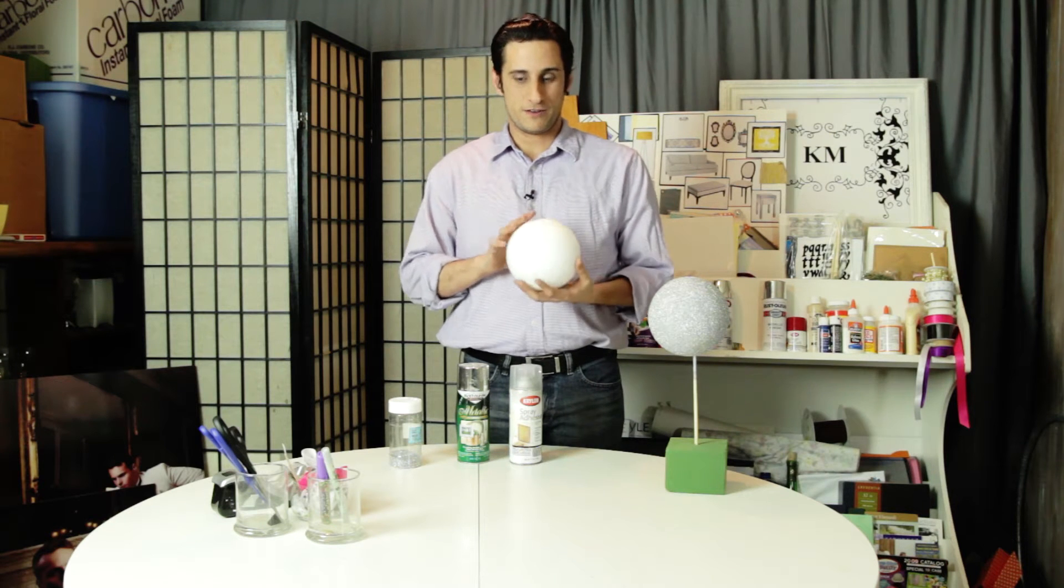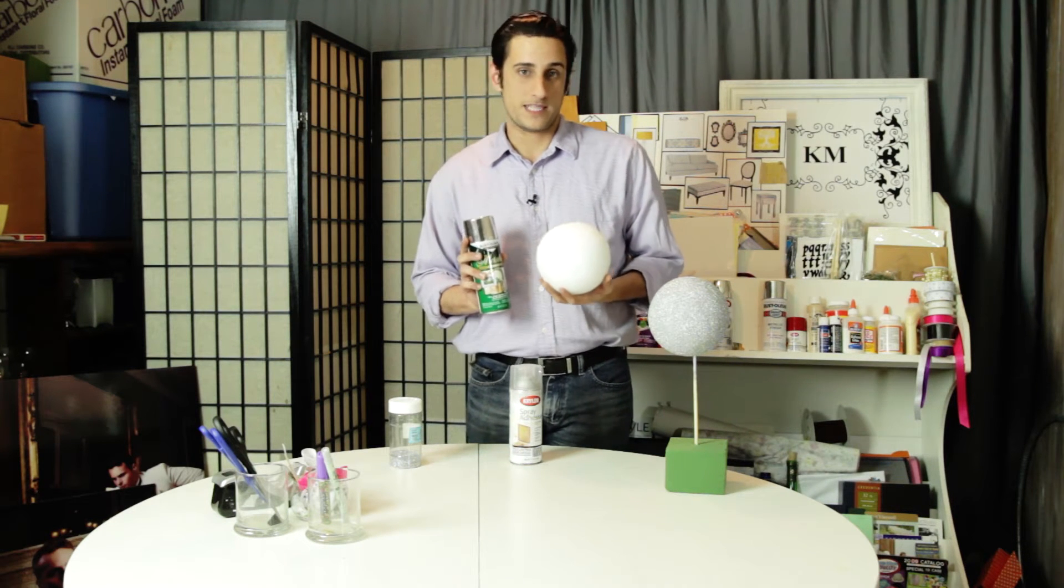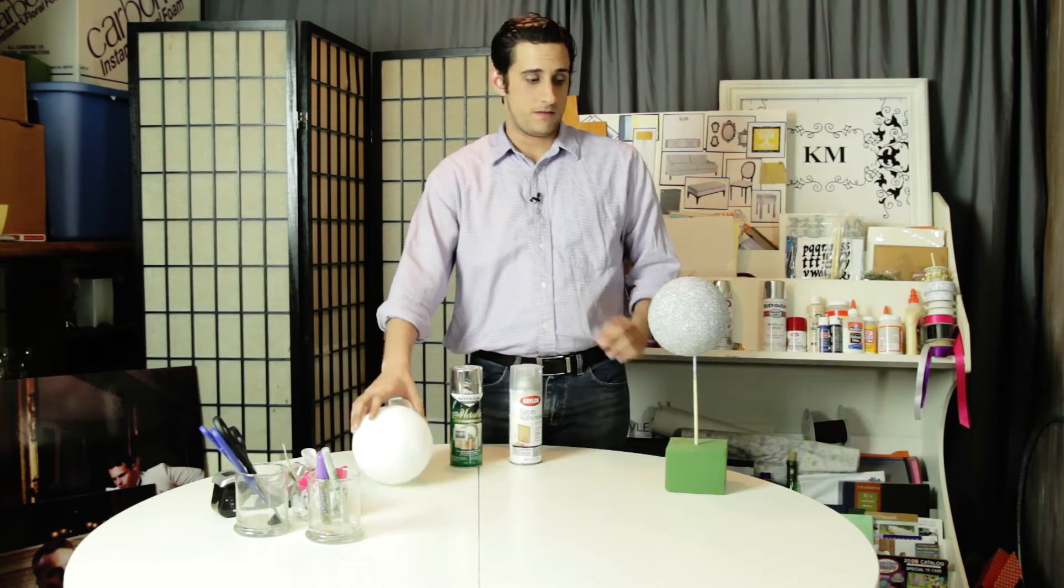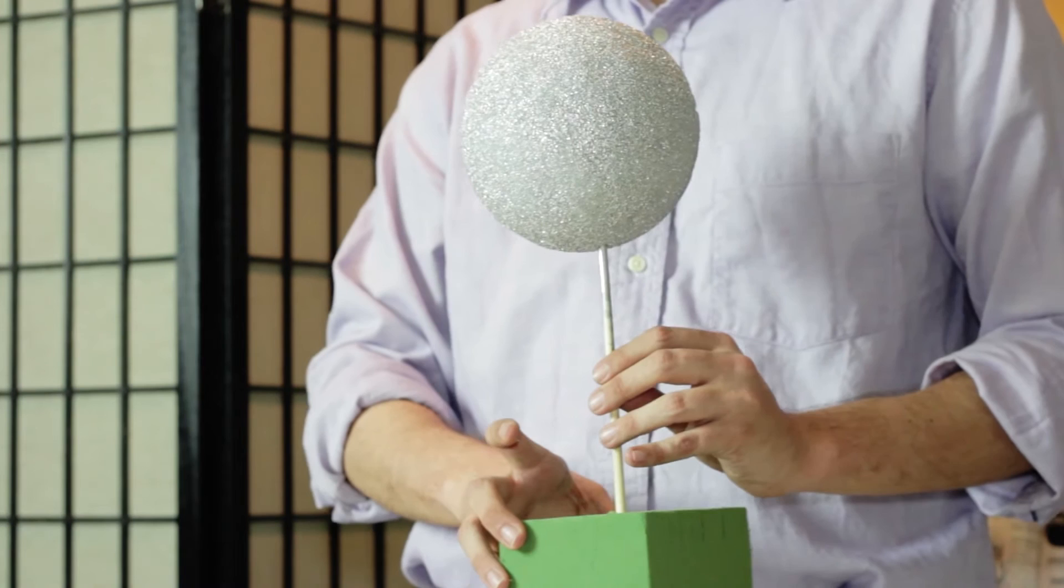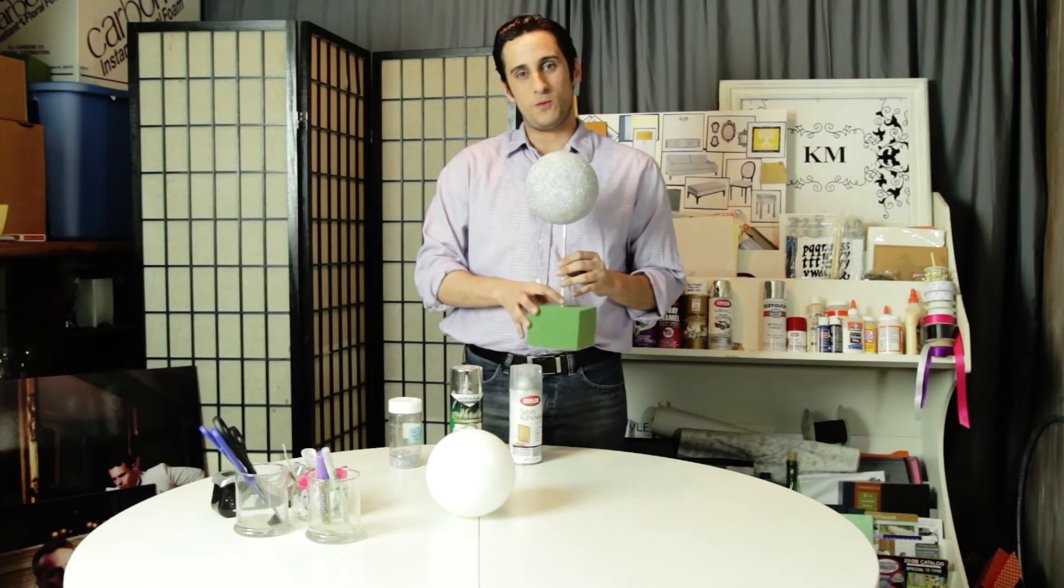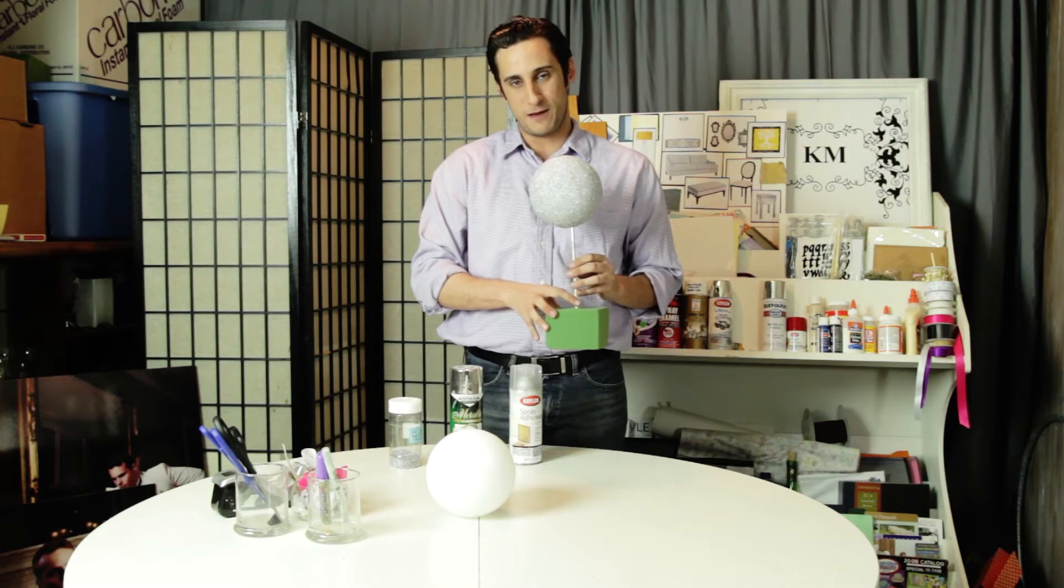First what you're going to do is take your styrofoam ball and spray it completely with your metallic spray paint. Give it an even coat and here's a tip for you: by sticking a wooden dowel in the bottom of it and putting it in a secure space like a styrofoam base, this is really going to make sure that it stays centered and even while you're giving it a nice even coat of spray paint.